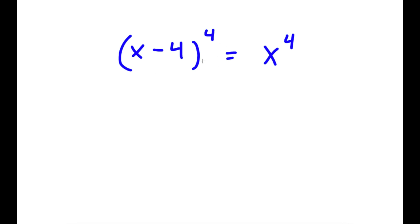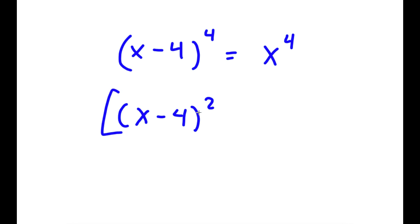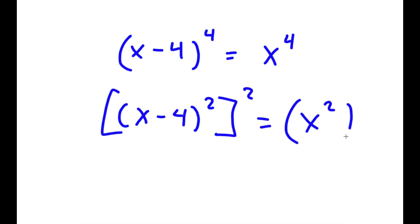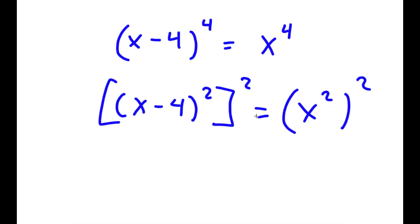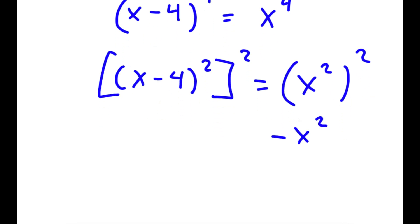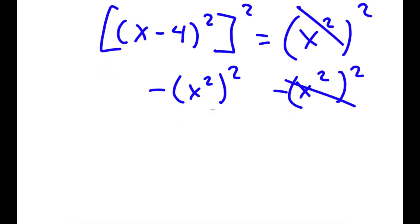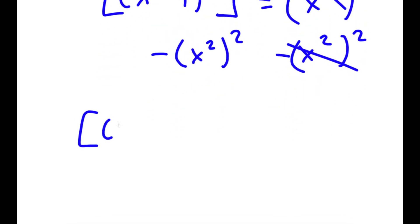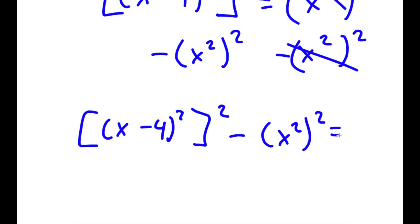In this problem, I have x minus 4 to the power of 4 is equal to x to the power of 4. To start, I'm going to rewrite this as x minus 4 squared, to the power of 2, is equal to x squared to the power of 2. And now I'm going to subtract both sides by x squared to the power of 2, so those two cancel out. And now I have x minus 4 squared to the power of 2 minus x squared to the power of 2 is equal to 0.